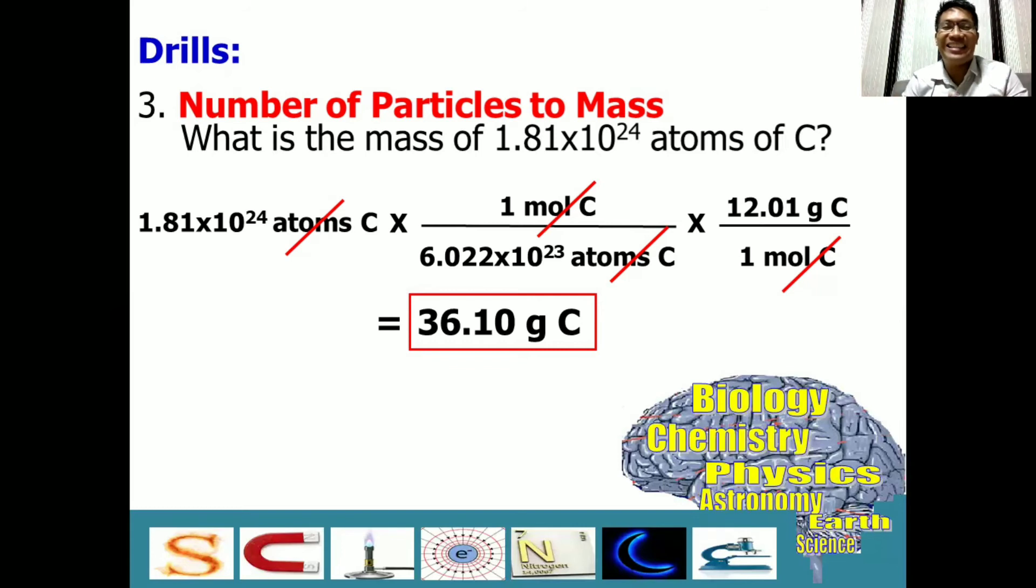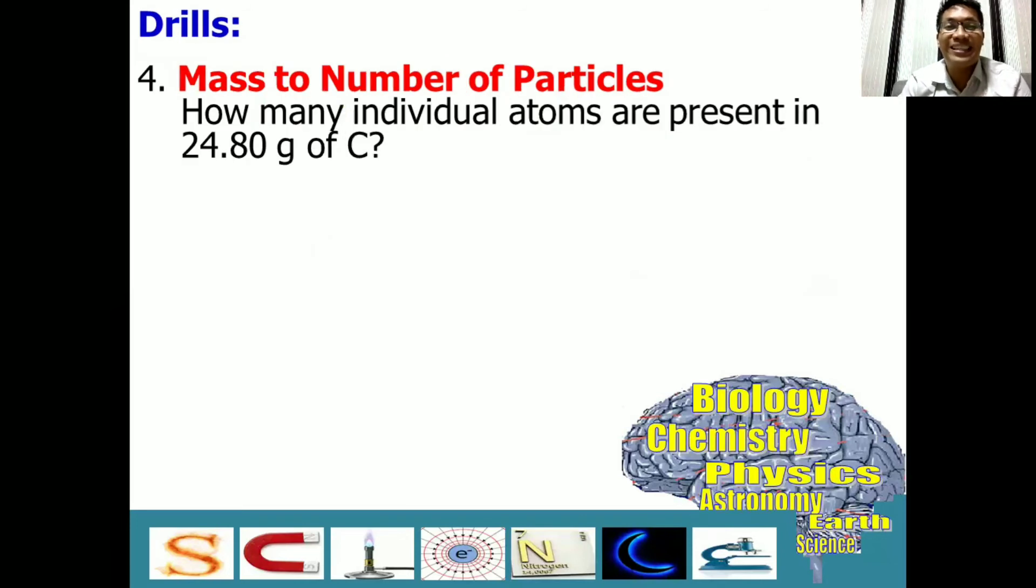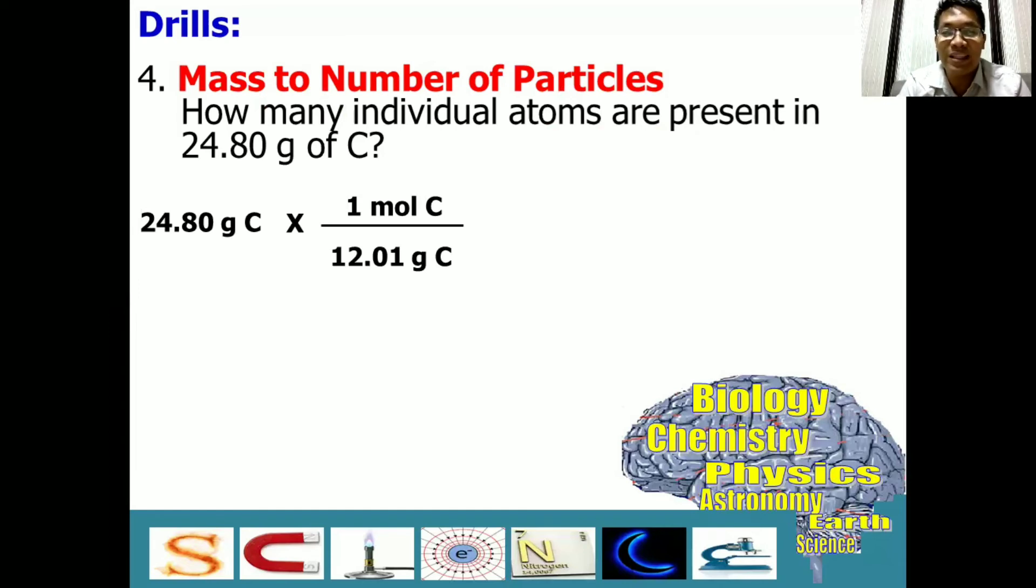And that is our answer for number 3. Let's have number 4. It is the opposite, mass to number of particles. First step again, write down the given, which is 24.80 grams carbon. Then, one mole of carbon is equal to 12.01 grams, because our goal is to eliminate the unit of grams. So, cancel.